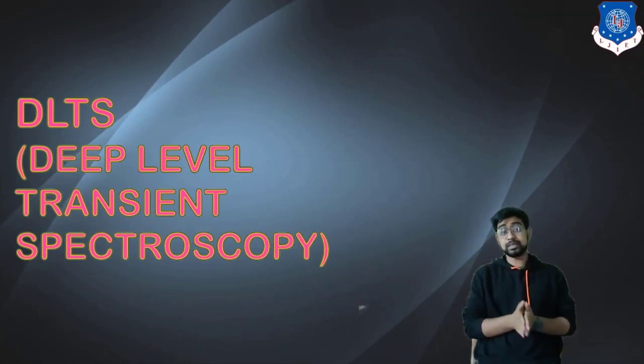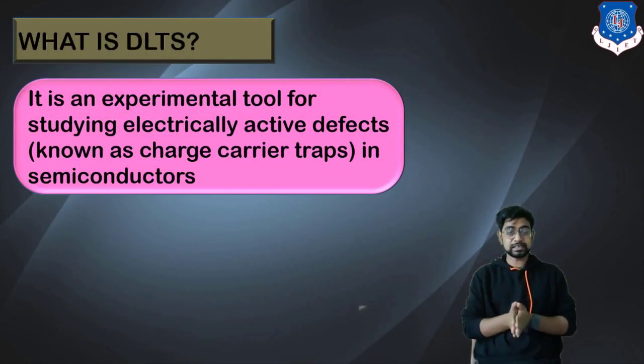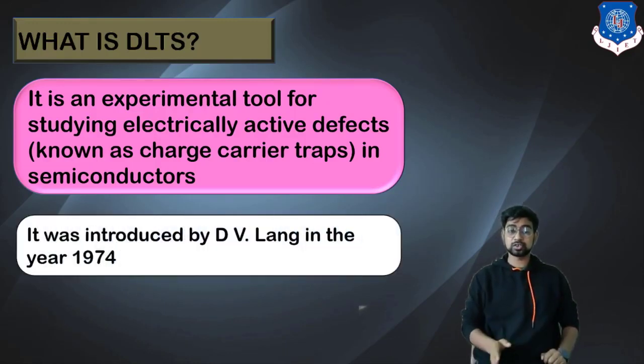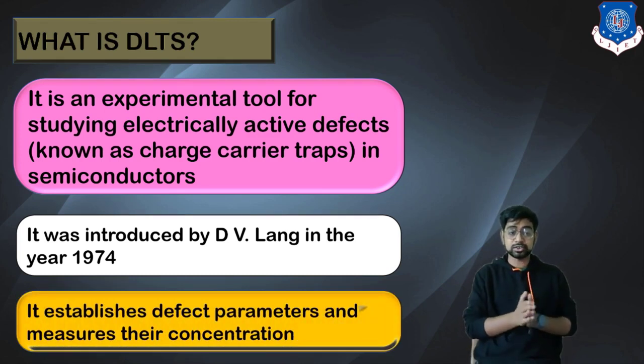DLTS stands for Deep Level Transient Spectroscopy. It is an experimental tool for studying electrically active defects known as charge carrier traps in the semiconductor. In the previous sessions we have discussed about traps in the semiconductor chapter. It was introduced by Dewey Lang in the 1970s. It establishes the defect parameters and measures their concentration. So it not only detects them but also detects their concentration.